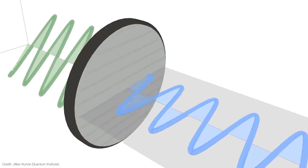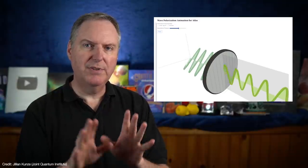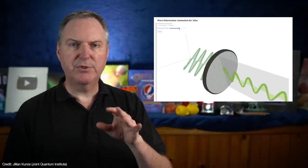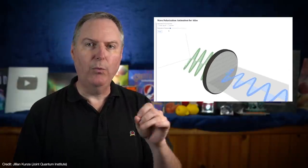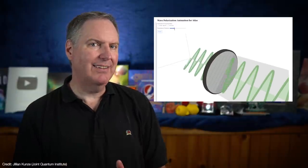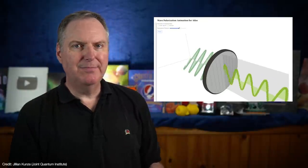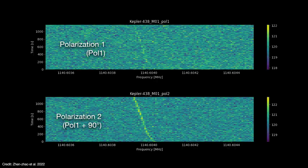FAST's multi-beam detector can measure polarization. So the team processed the signals against two polarization angles that are exactly 90 degrees from each other. And these two angles were chosen because FAST's instruments tend to generate signals of their own at one of these angles. The chances of an alien signal having exactly the same polarization as FAST's instruments isn't exactly zero, but it should be fairly unlikely.